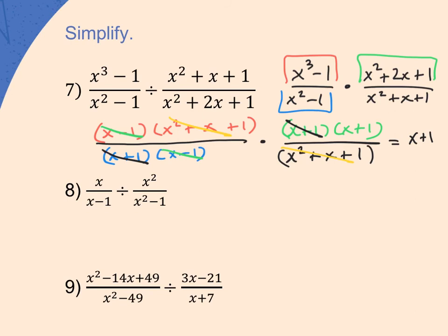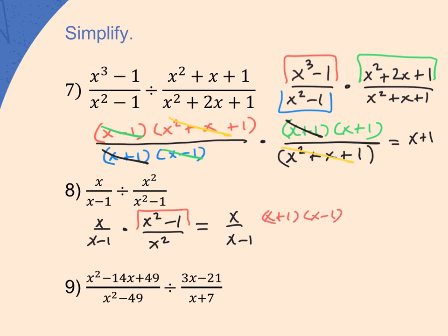Set up keep-change-flip: x over x minus 1, change to multiplication, flip upside down. The only thing to factor is x squared minus 1, which factors into x plus 1 times x minus 1. You can also factor x squared as x times x if you want, but you don't have to. Simplify x minus 1 with x minus 1, and cancel one of the x's. The final answer is x plus 1 over x. You can't cancel the x because the x plus 1 in the numerator is attached.